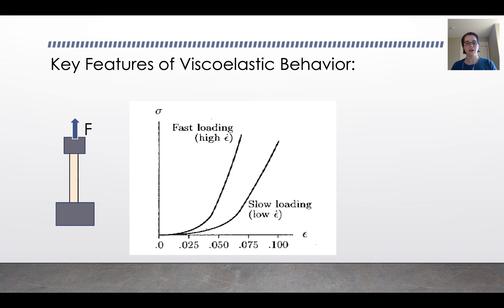Another characteristic of viscoelastic behavior is when you get different responses based on how fast you load the material. If you load it quickly, you end up with a steep slope for tendon. And if you load it slowly, you end up with a shallower slope for tendon. This is known as rate dependence. The loading rate plays a role in how stiff the material is. It's another key feature of viscoelastic behavior.